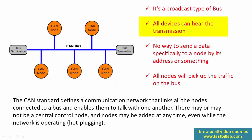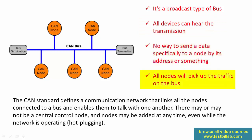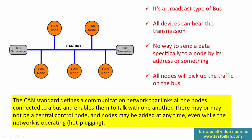All devices can hear the transmission when any device transmits. There is no way to send data specifically to a node by using its address or something. All nodes will pick up the traffic on the bus. The CAN standard defines a communication network that links all nodes connected to a bus and enables them to talk with one another.